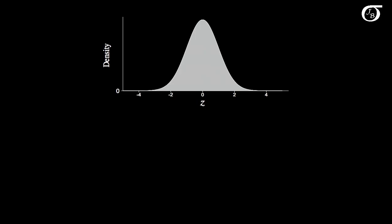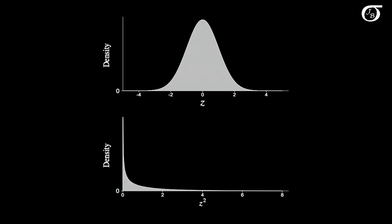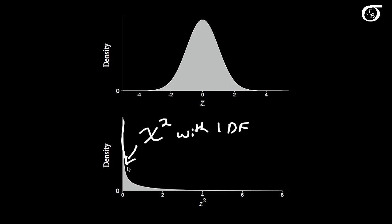Let's see what that looks like visually. Here we have a standard normal distribution. Now if we were to square the random variable here, we get a distribution that looks like this. Note the axes are changing here, so you don't have the same values on the axes. But this is a chi-square distribution with one degree of freedom — it looks something like that.